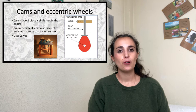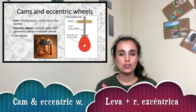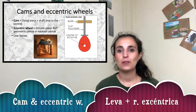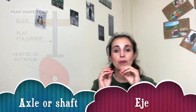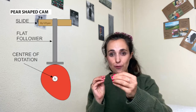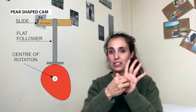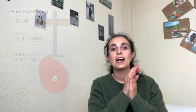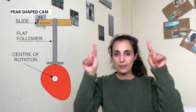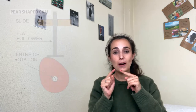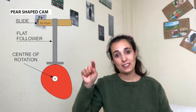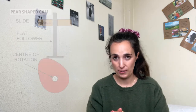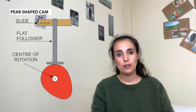The first example is cams and eccentric wheels. A cam is an ovoid-shaped piece with a shaft, but the shaft is not in the geometrical center of the ovoid piece. An eccentric wheel is a circular piece where the geometric center and the rotational center are not at the same point, so the result is something like what you can see here.